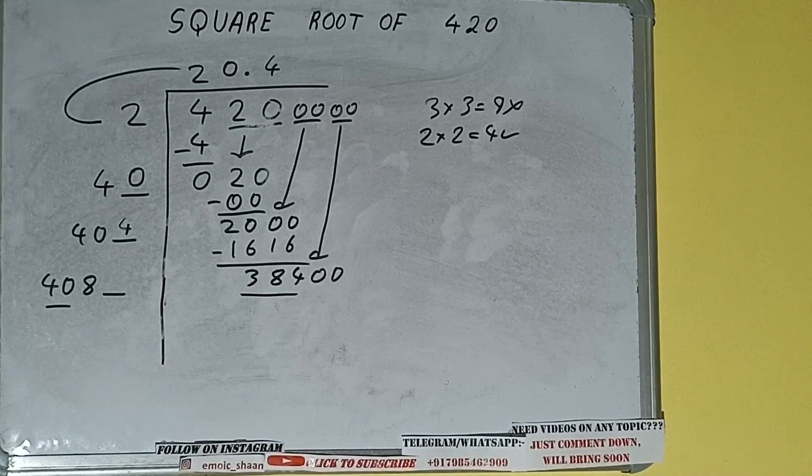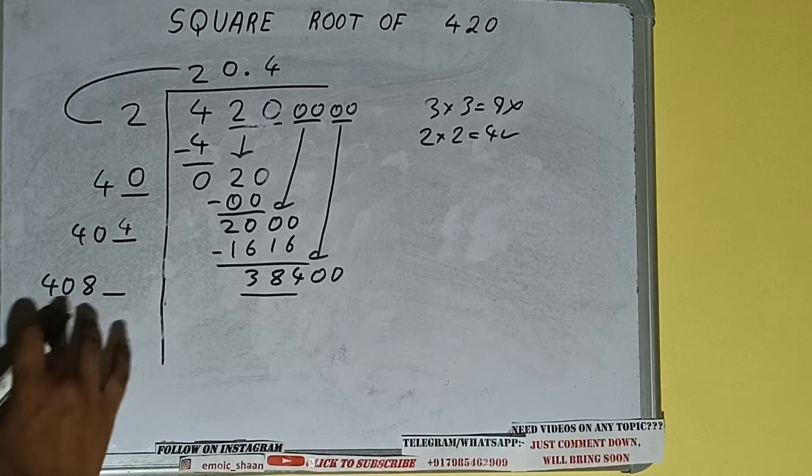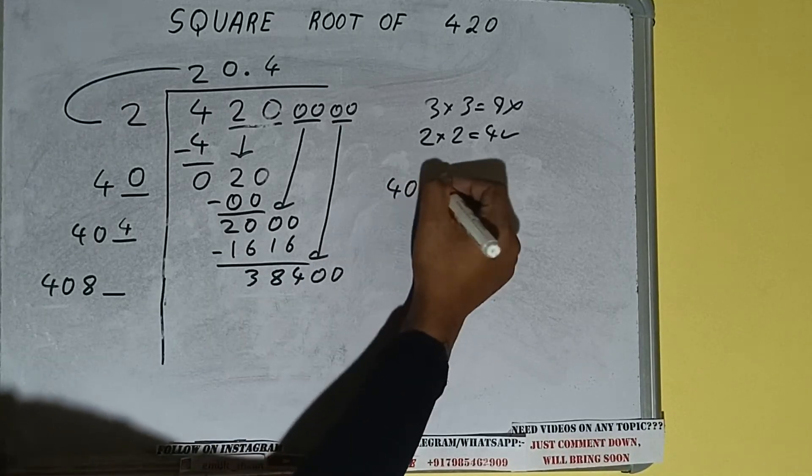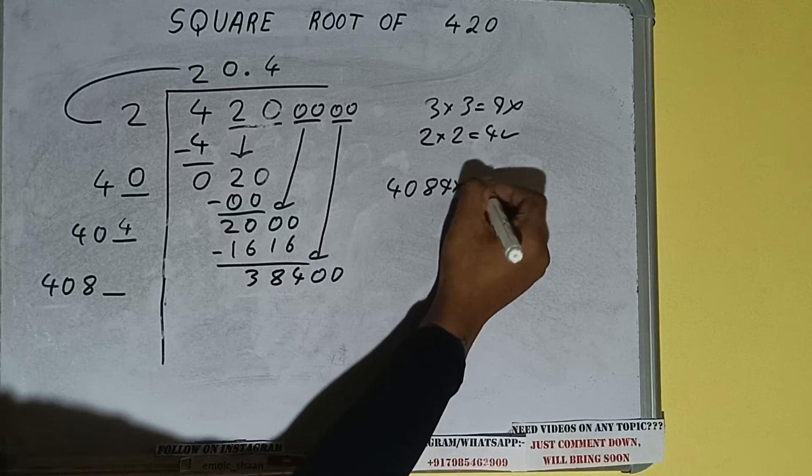So 49 times is 360, so we can try 9 times. 4089 into 9, we can try.